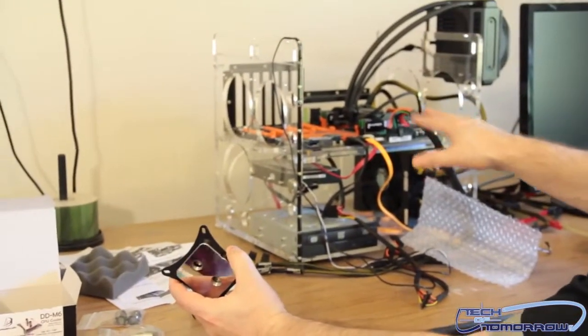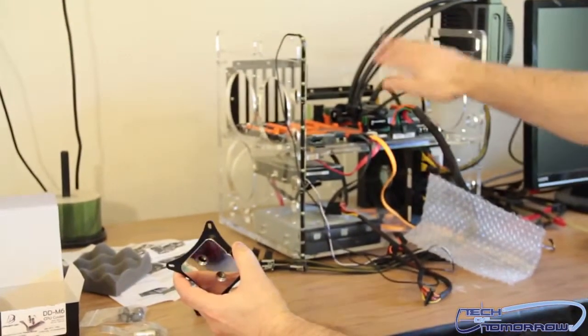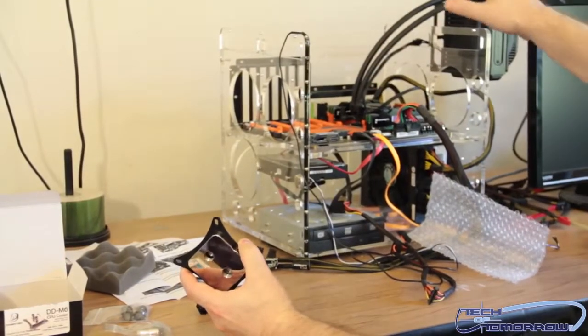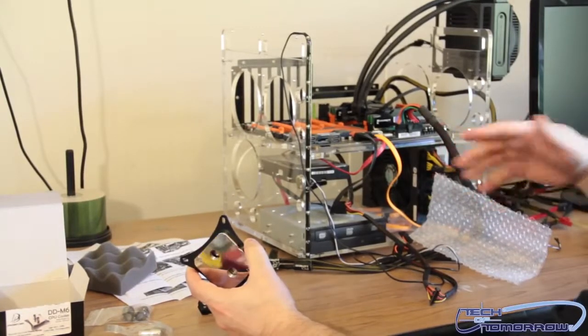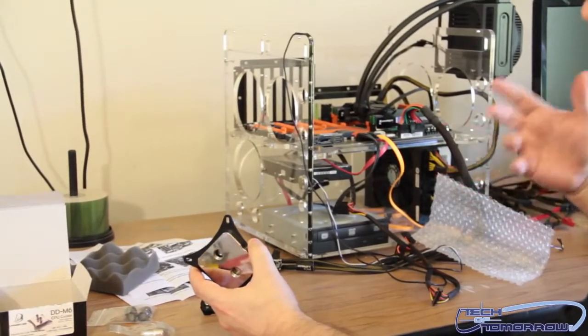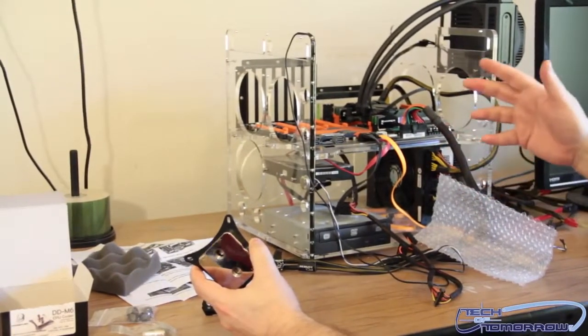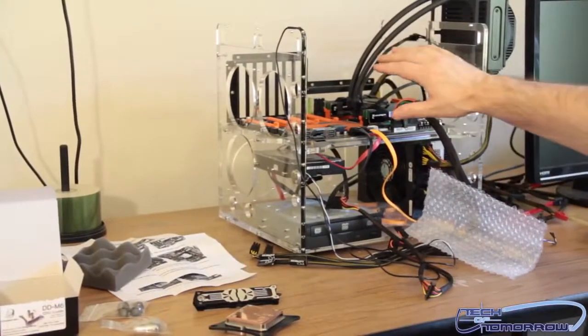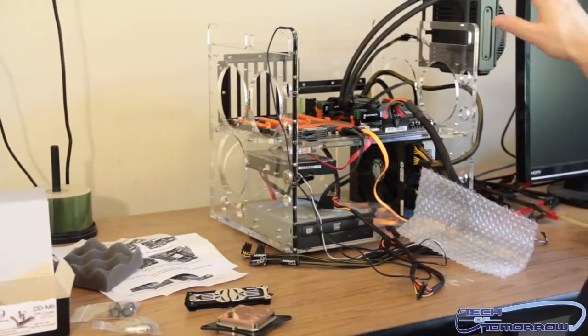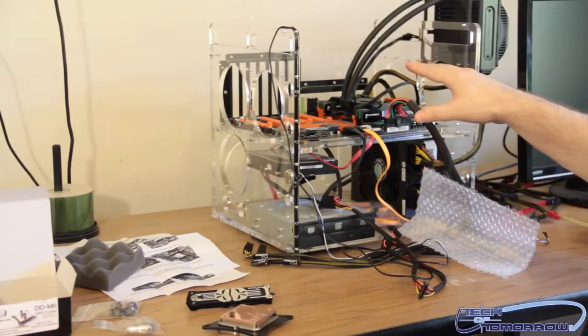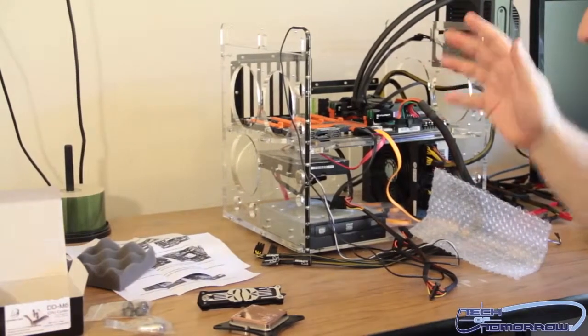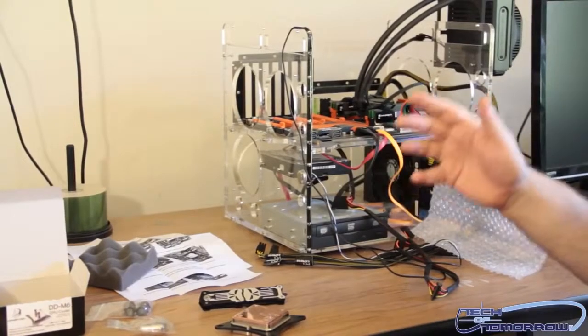This is our LGA 2011 platform. Currently, right now, we have the Intel Standard that came with it. But now we're going to start testing a bunch of water blocks, starting out with Danger Den. We're also going to be working with EK and Swift Tech, and we're going to be doing just a lot of different testing. So what we're going to do is we're going to remove this completely. We're going to put a Dual Radiator back here in the back. And then we're going to set up different blocks on here, starting off, like I said, the Danger Den DD-M6.